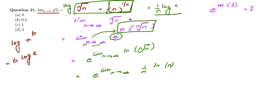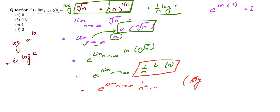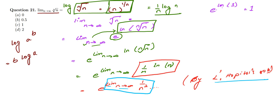We now apply L'Hôpital's rule to evaluate limit n→∞ of (ln n)/n. Differentiating numerator and denominator, we get (1/n)/1 = 1/n. So the limit becomes e raised to the power of limit n→∞ (1/n). As n approaches infinity, 1/n approaches 0.